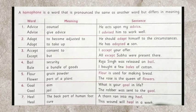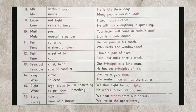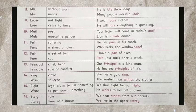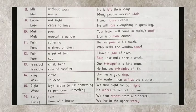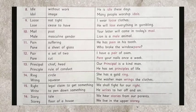Next pair of homophones are 'idle' and 'idol'. Idle, I-D-L-E, means without work. A sentence is: He is idle these days. Idol, I-D-O-L, means image. Sentence: Many people worship idols.